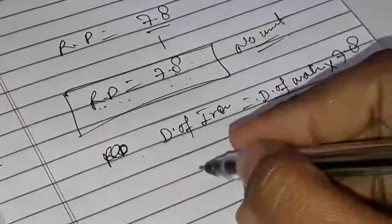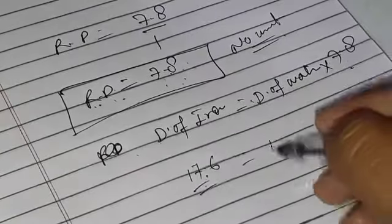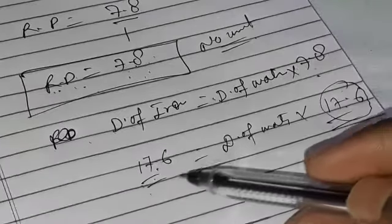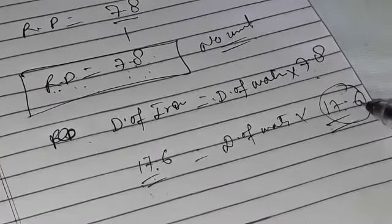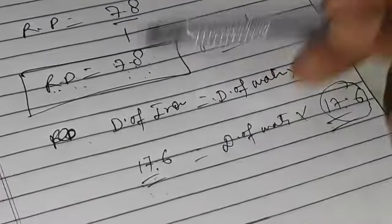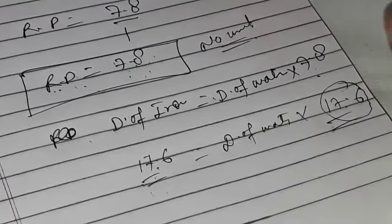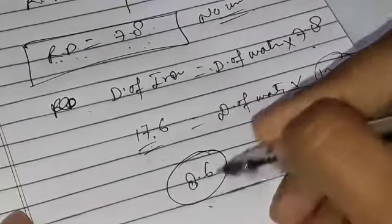Suppose you have some other substance whose relative density is 17.6. That means that substance is 17.6 times more dense than water. Similarly, if the relative density is 8.6, it means that substance is 8.6 times more dense than water.